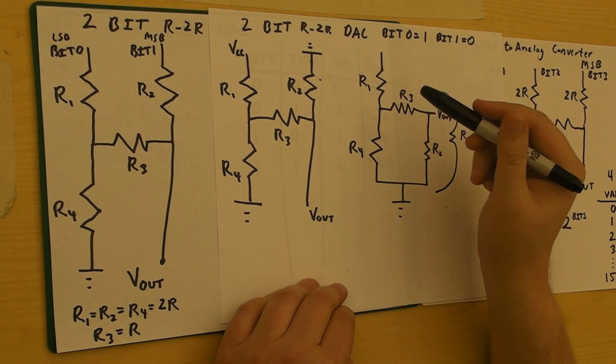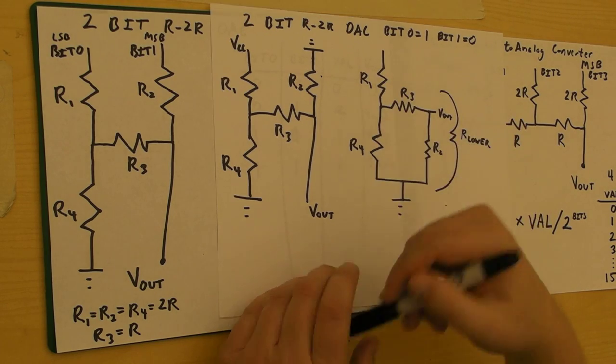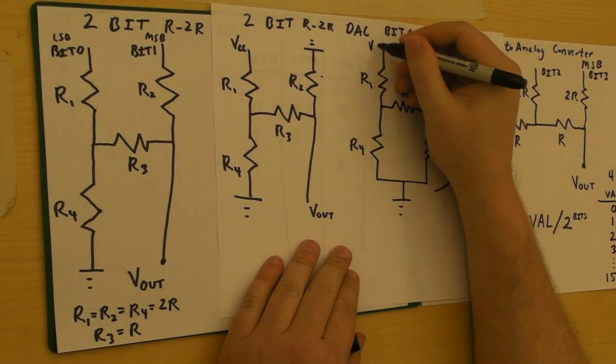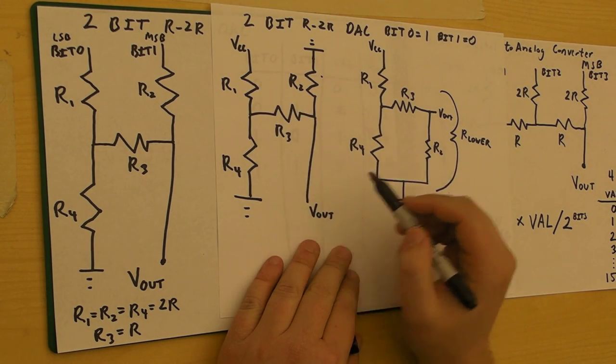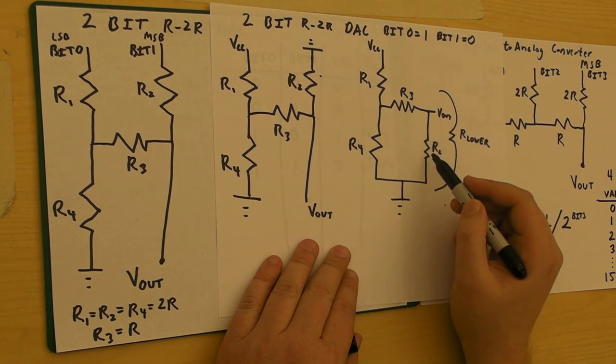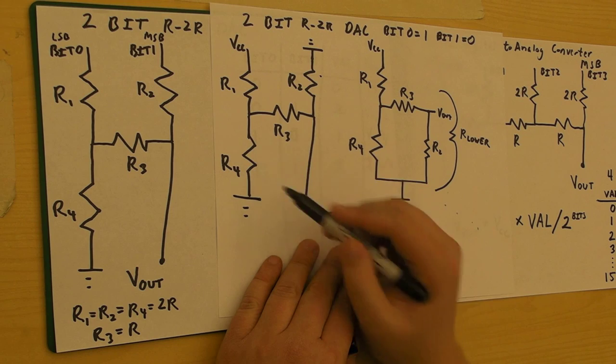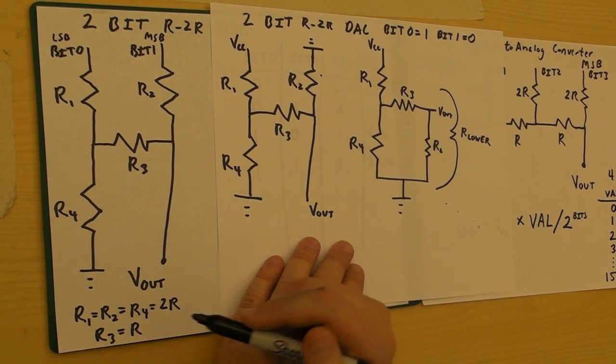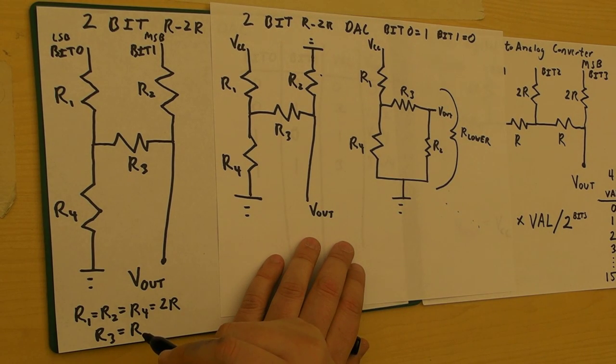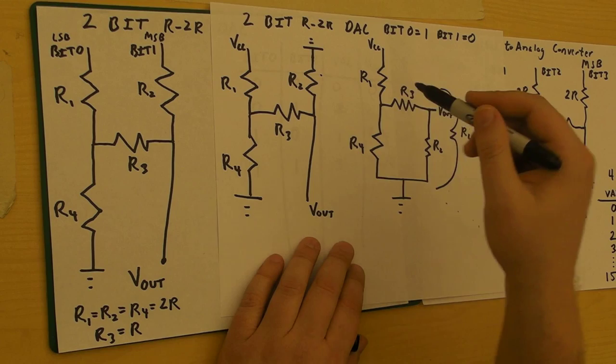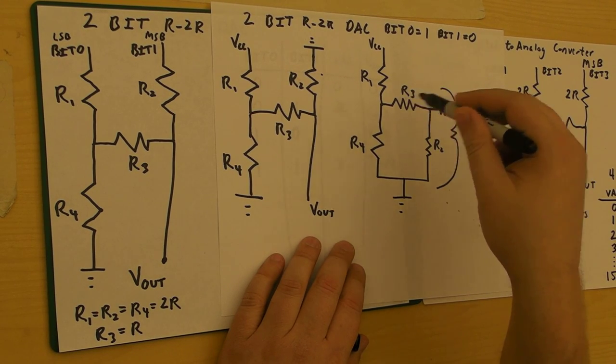If I rearrange it, now I have the circuit coming in where I have VCC up here, R1 here, now I have R3 and R2 going to ground, and R4 going to ground. This looks like just a resistor circuit. Well, what we can do is simplify this thing and figure out what the values are for the resistors at different points in the circuit.